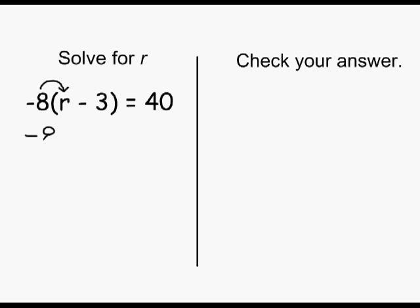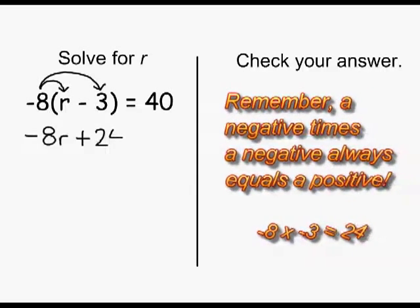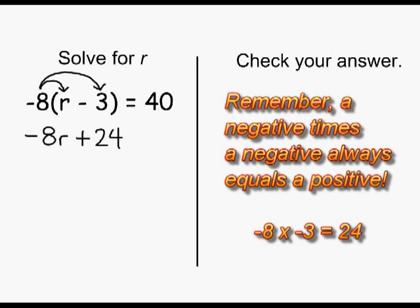Next, we multiply negative 8 times negative 3. Although inside the parenthesis it says minus 3, let's consider that 3 a negative. A negative times a negative is a positive, so negative 8 times negative 3 is positive 24. So we simply write plus 24 below and then bring down equals 40.